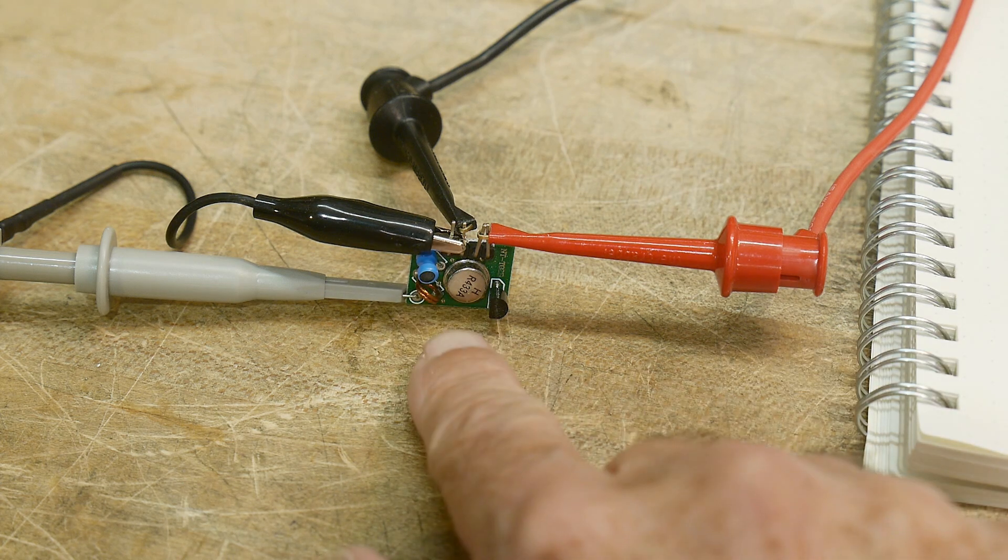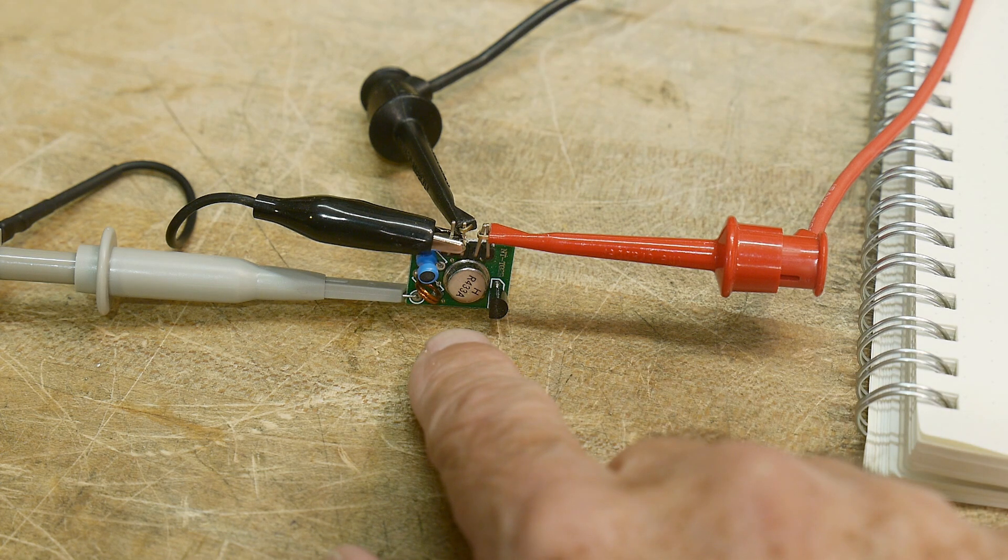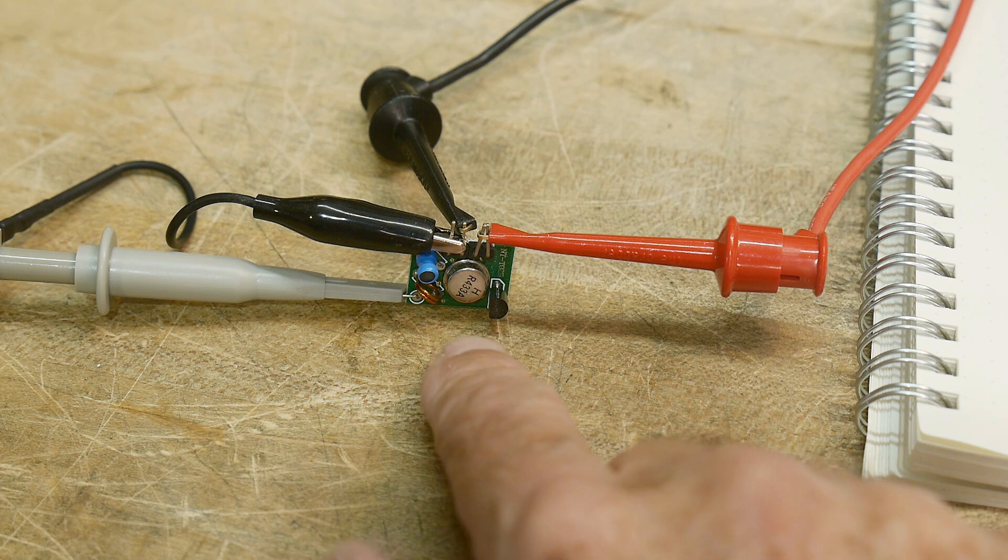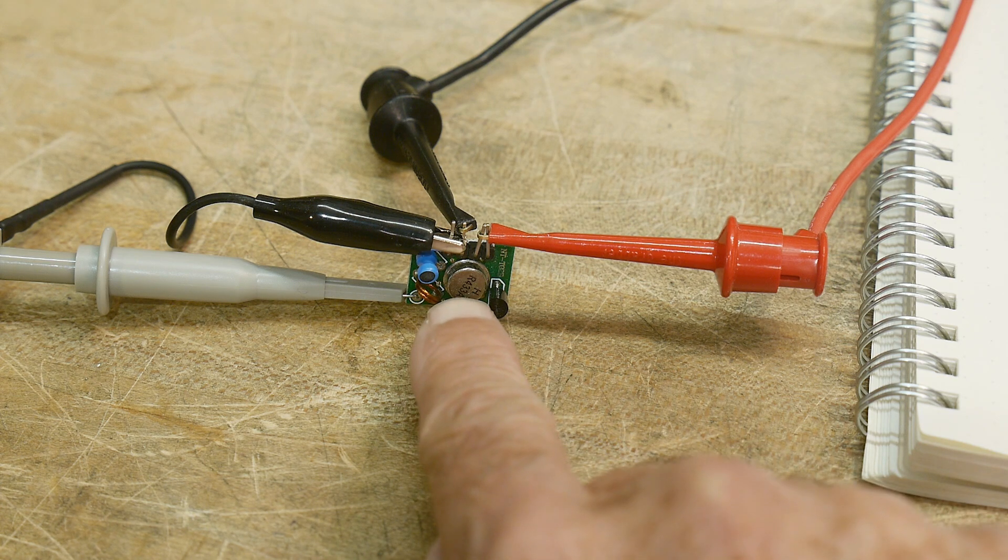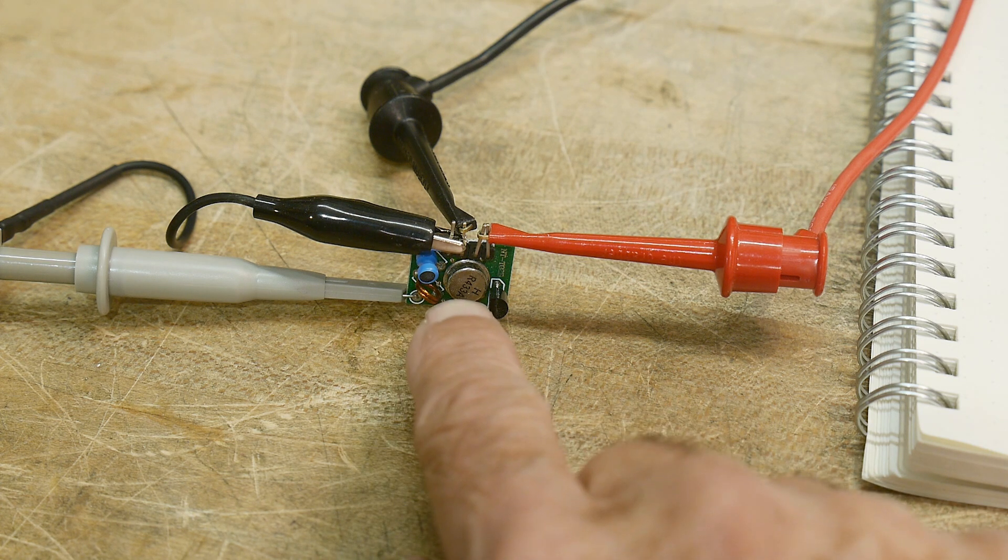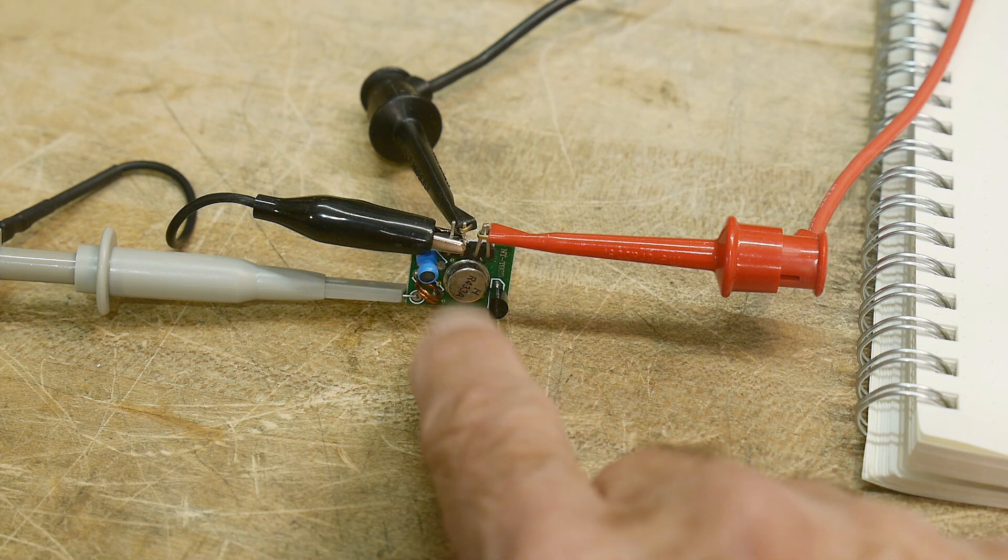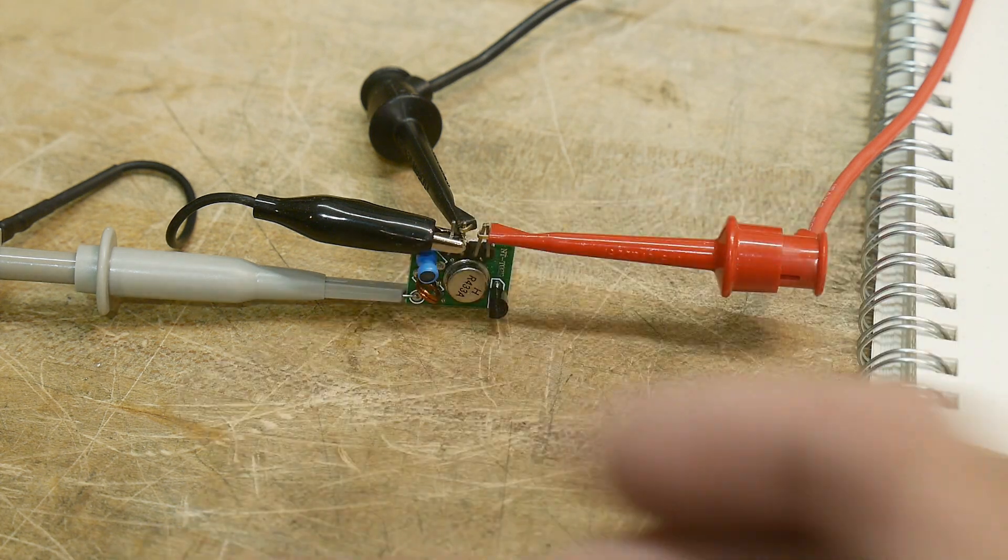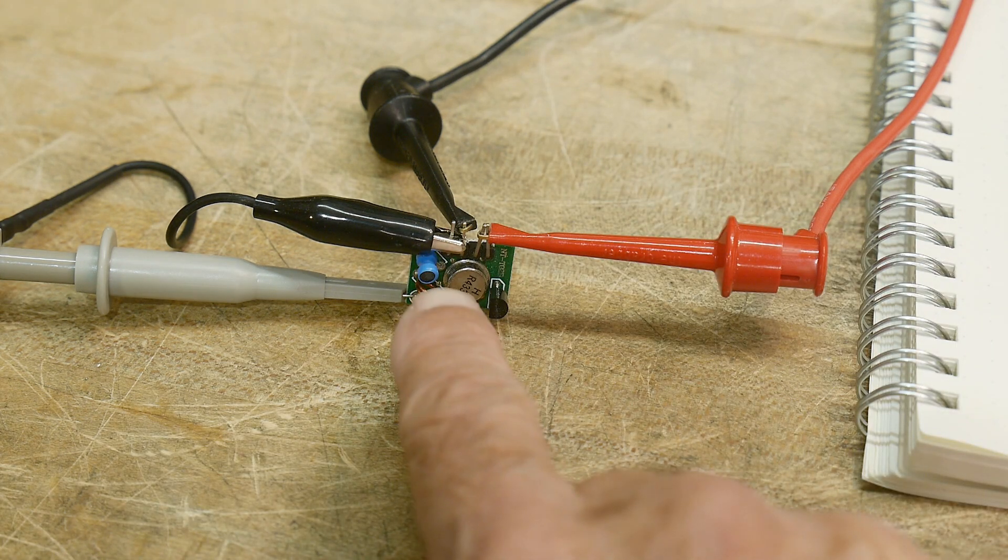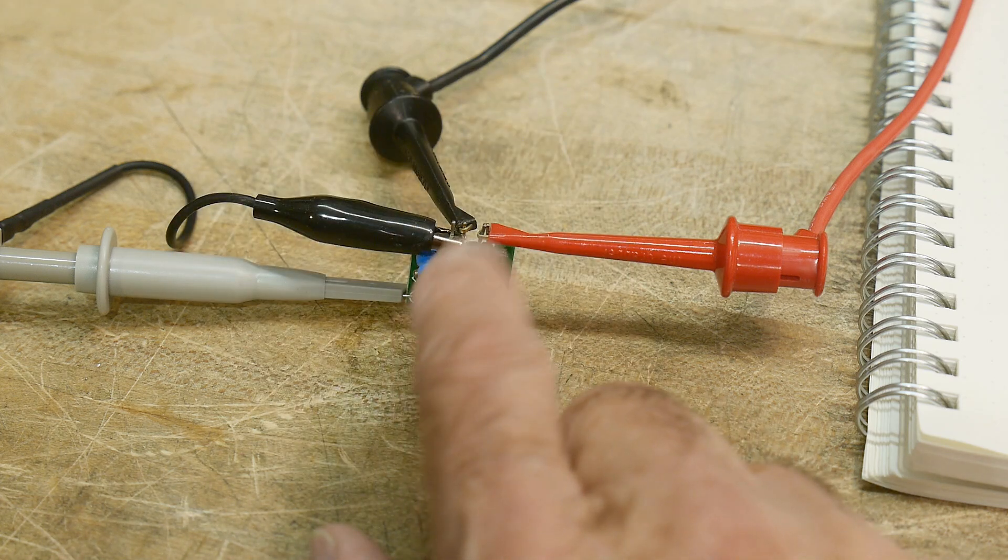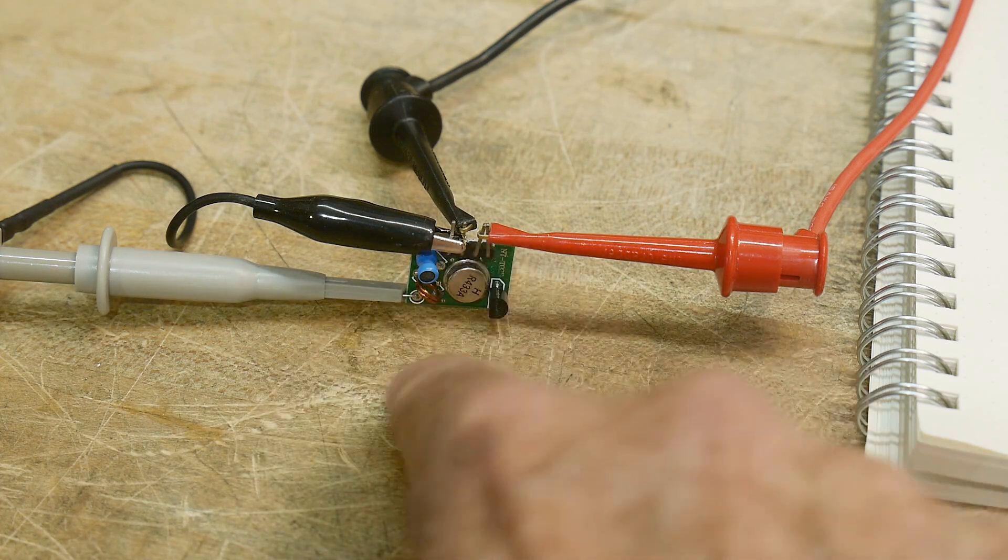So I'm going to be looking at this oscillator. This is a 433 megahertz oscillator and it uses a SAW resonator, a surface acoustic wave resonator as the crystal. Instead of a quartz crystal, it is using quartz, but it's using the surface acoustic wave formulation. I need to do a video on those.